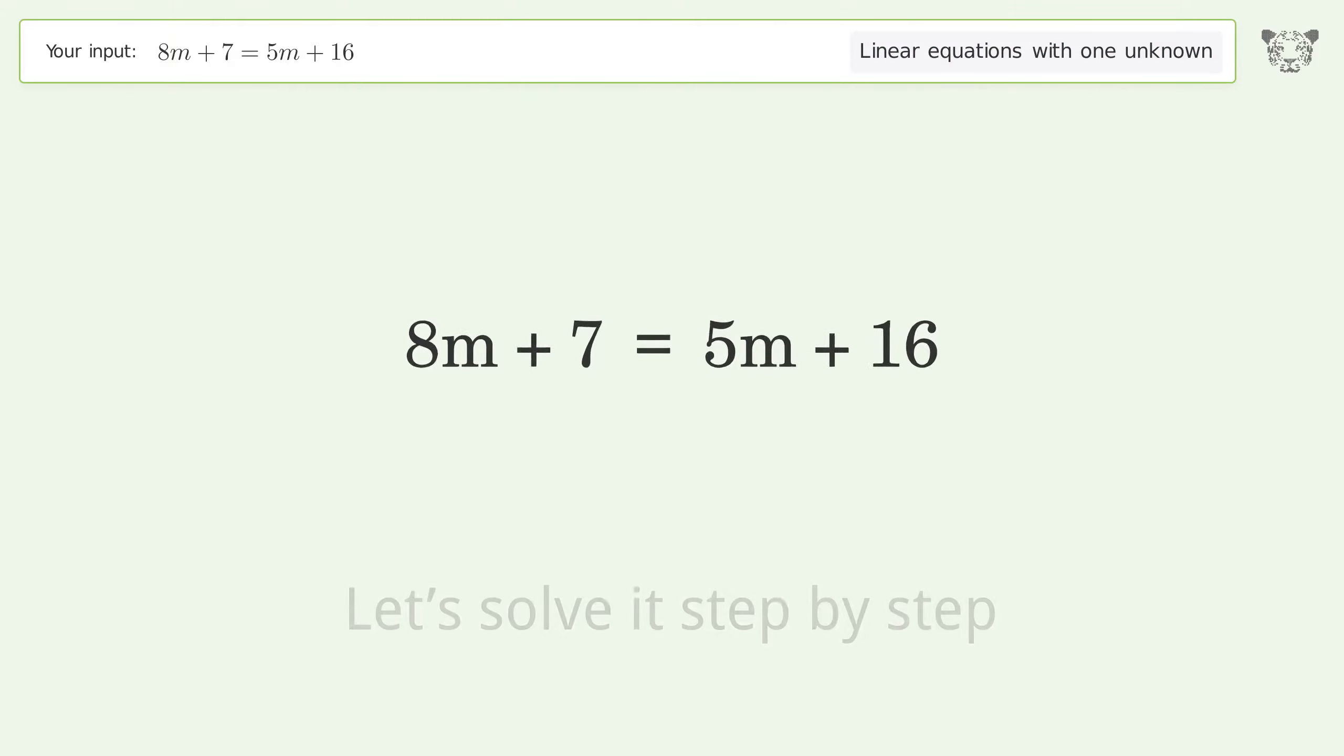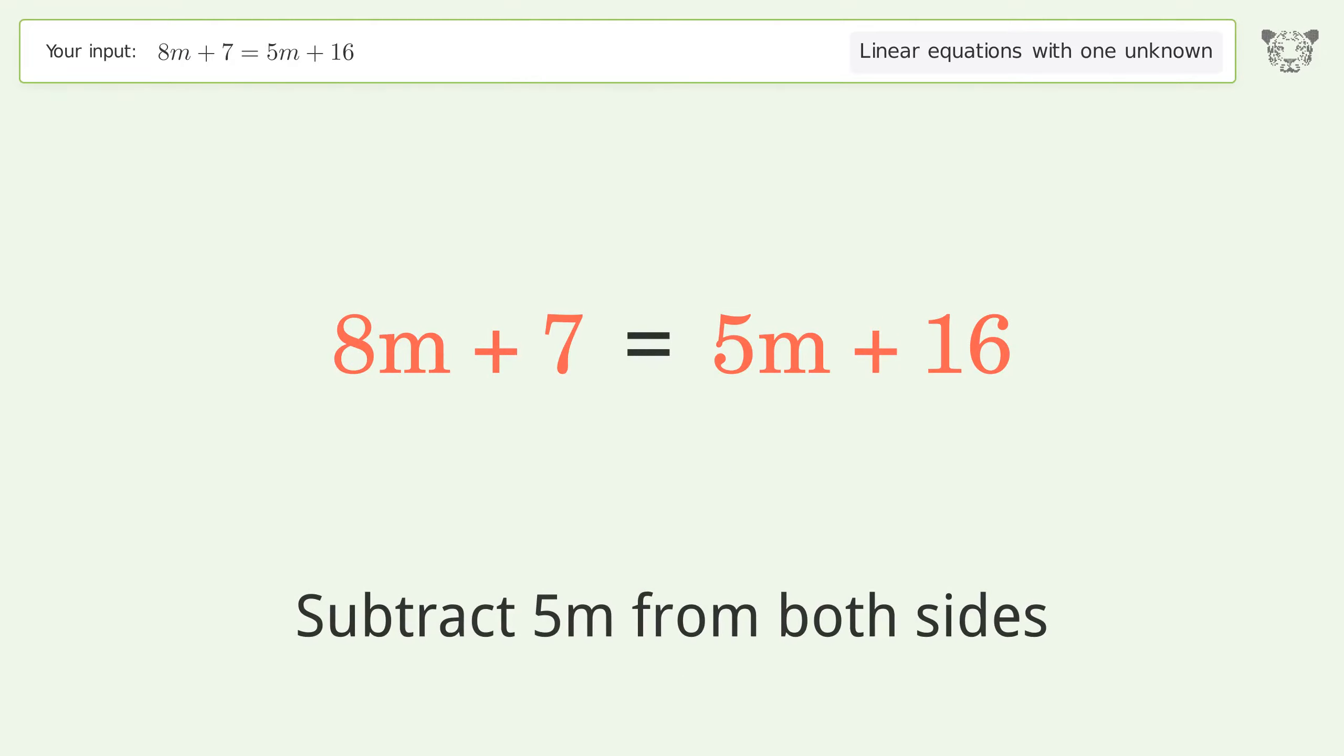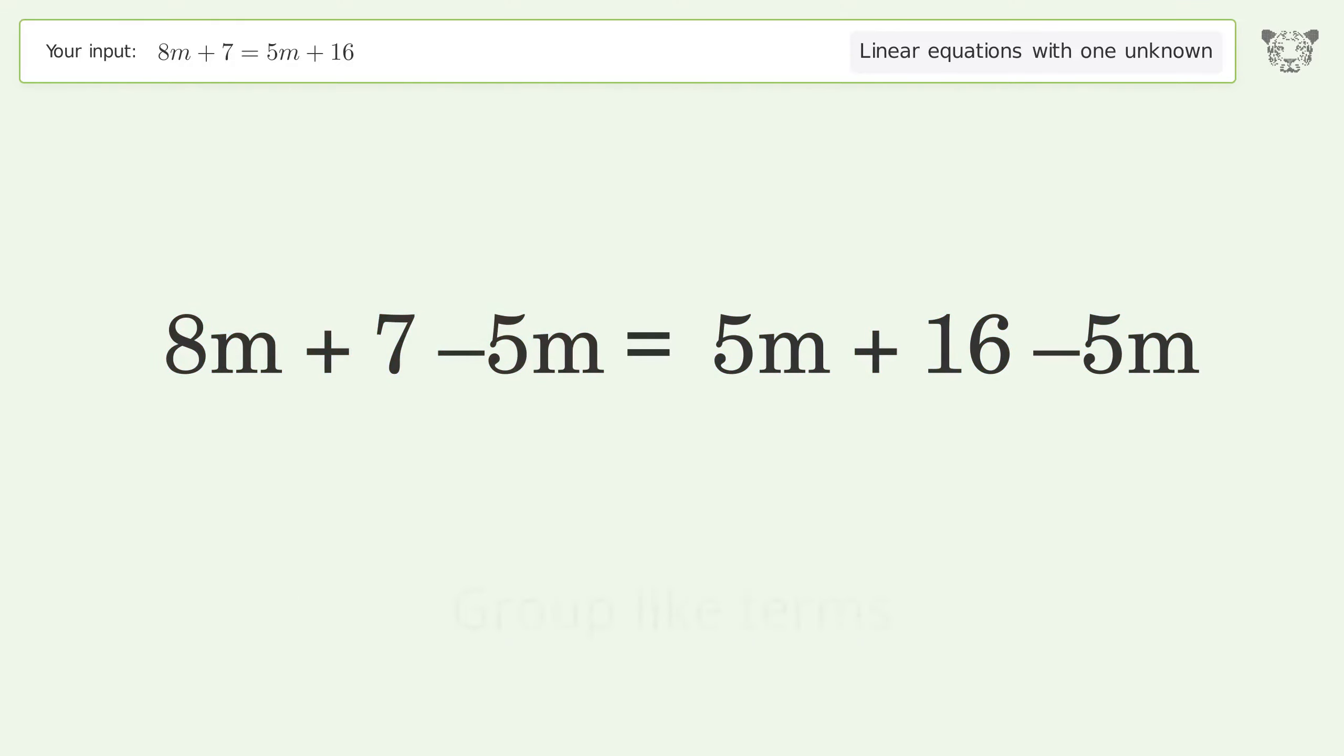Let's solve it step by step. Group all m terms on the left side of the equation. Subtract 5m from both sides. Group like terms.